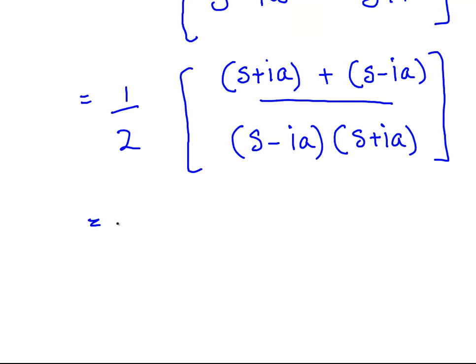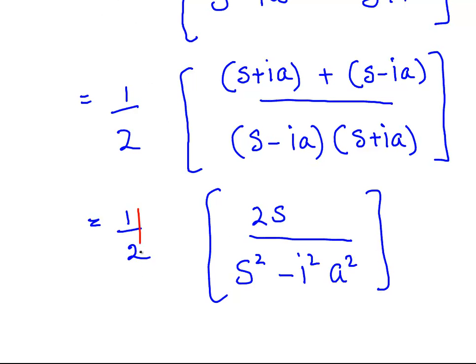Working that out a little bit more, we would have half. What's the top line? s + ia. So that's 2s. ia - ia, that's just zero. So it's 2s. Multiply below. s² + ia - ia. That is -i²a². The half will cancel out with the 2. -i² is +1.